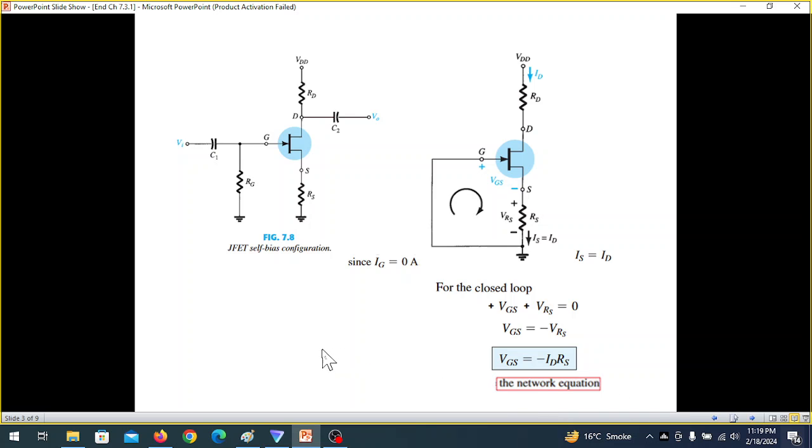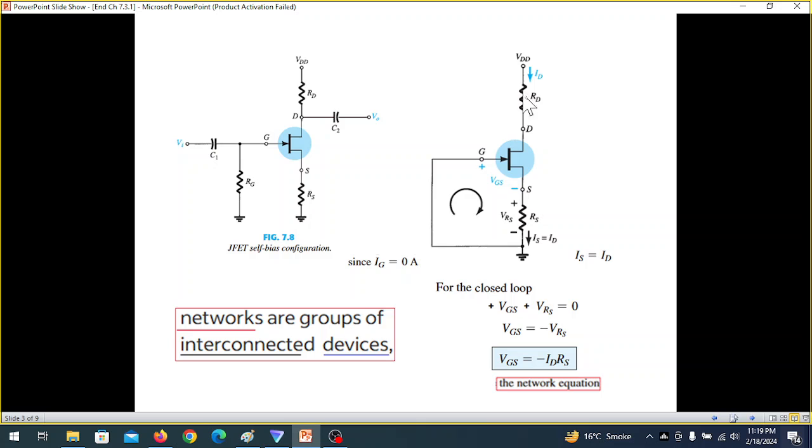Now just for information let me clarify that when we talk of networks, networks are groups of interconnected devices. So this is a network and it has a main device as the JFET. So this whole thing is a network. But this is a device.